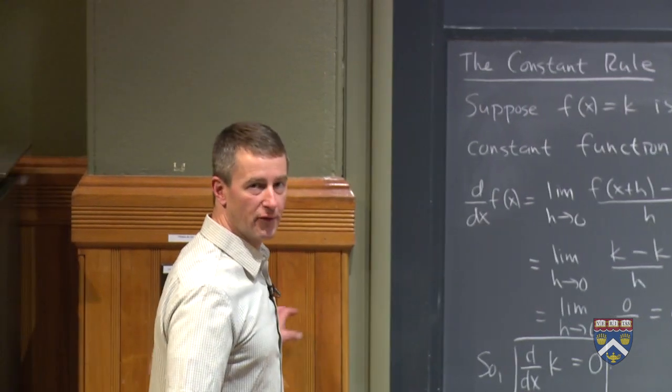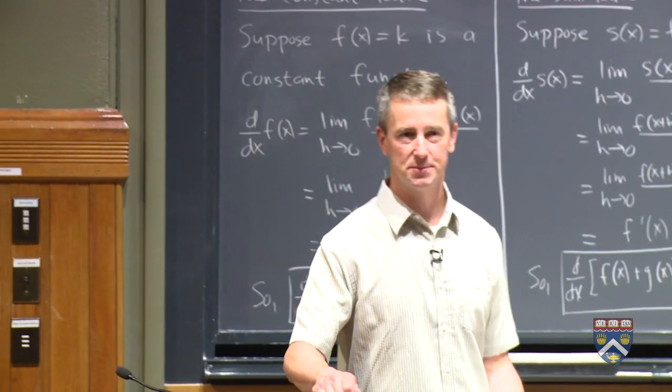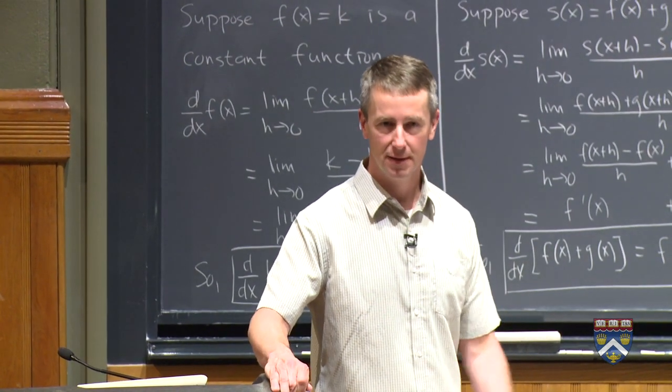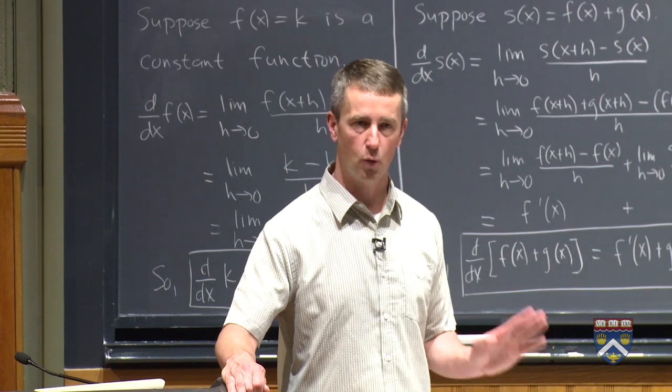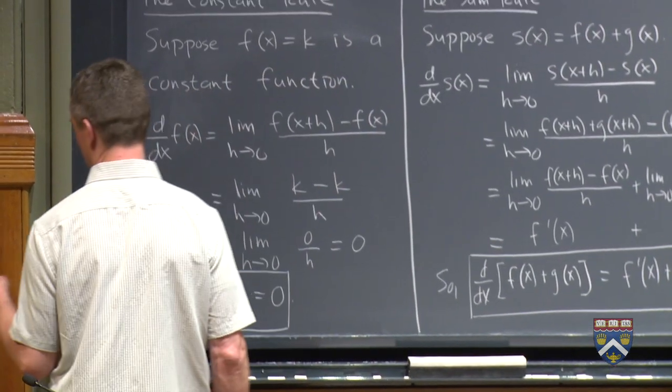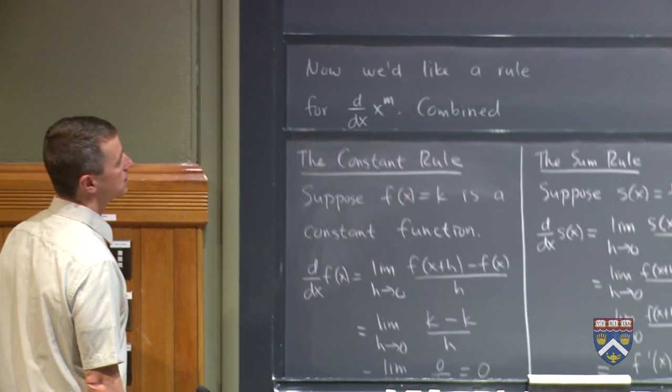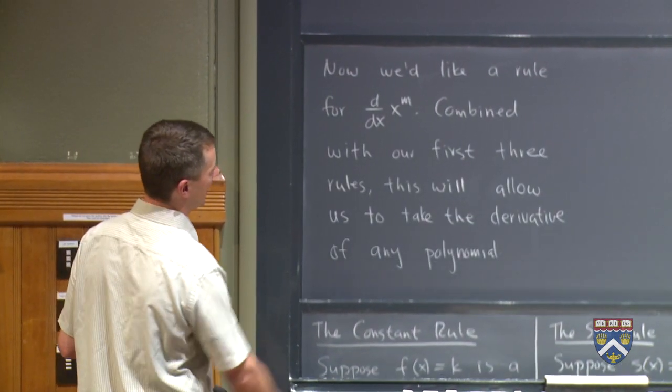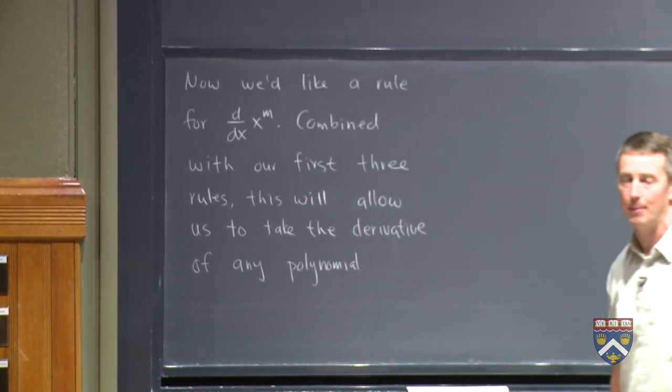Now we'd like to come up with a rule for a specific family of functions. So you can think about what would be a natural specific family of functions to do first. Based on the ones that we've done using the limit definition that we know work, you might come to the correct conclusion that it would be wise to look at power functions. So we'd like to find a rule for the derivative of x to the m.